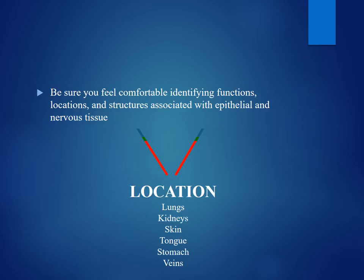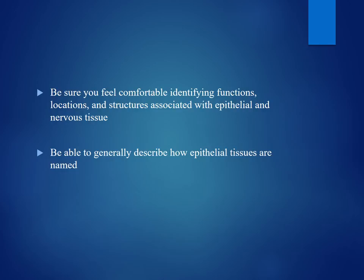Before your practical quiz, you should be comfortable identifying tissues using microscopes and being able to provide a function, a location, and describe the structure associated with epithelial tissue and nervous tissue. When naming those tissues, remember that each tissue is named based on: one, the number of layers; two, the shape of the cell; and three, you must specify whether it's epithelial tissue or nervous tissue.